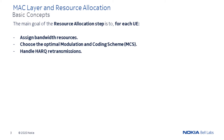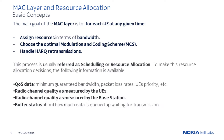The MAC layer's main goal is to, for each user equipment or UE, assign bandwidth resources, choose the optimal modulation encoding scheme, or MCS, and handle the HARQ retransmissions. This process is usually referred to as scheduling or resource allocation.